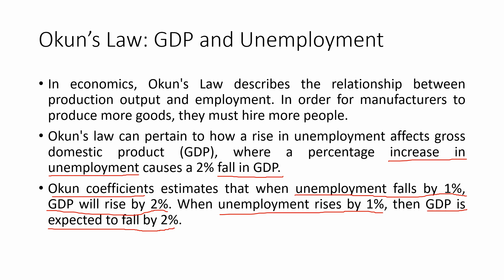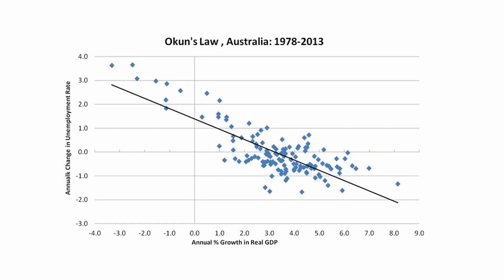When GDP changes by 2 units or 2%, there's a corresponding change in the opposite direction in unemployment by 1 unit or 1%. As illustrated by this graph over here, there's a change in unemployment and a change in GDP from 1 to 3 — a 1 unit change in unemployment and a 2 unit change in GDP.